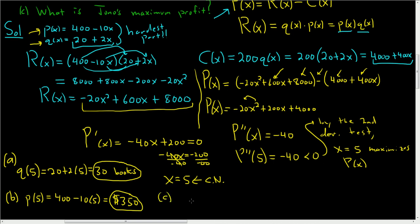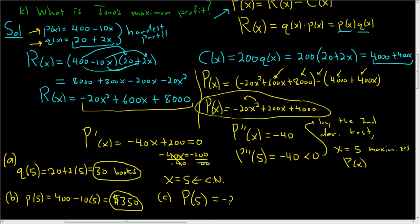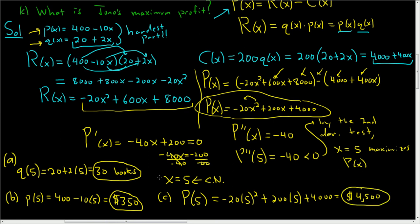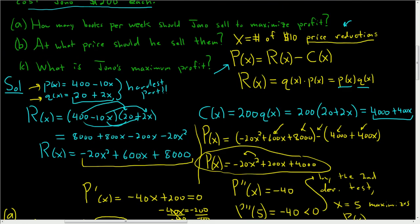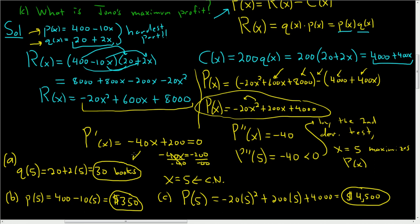Part C wants the actual maximum profit, so you just plug 5 into big P. So P(5) = −20 times 5 squared plus 200 times 5 plus 4,000, which gives $4,500. That is the maximum profit. To summarize: Part A — quantity, 30 books; Part B — price function, $350 each; Part C — profit function gives $4,500 maximum profit.